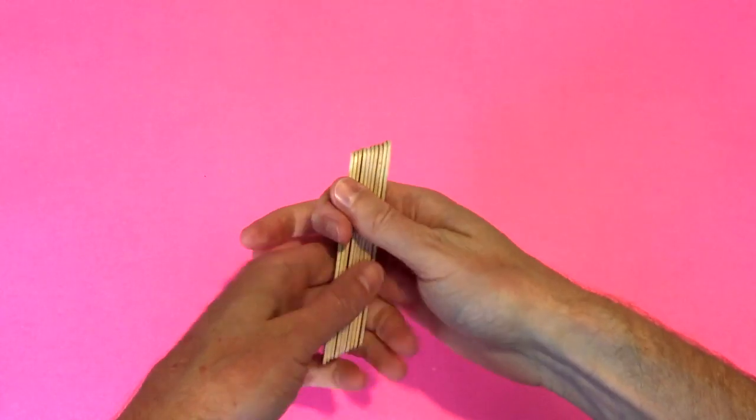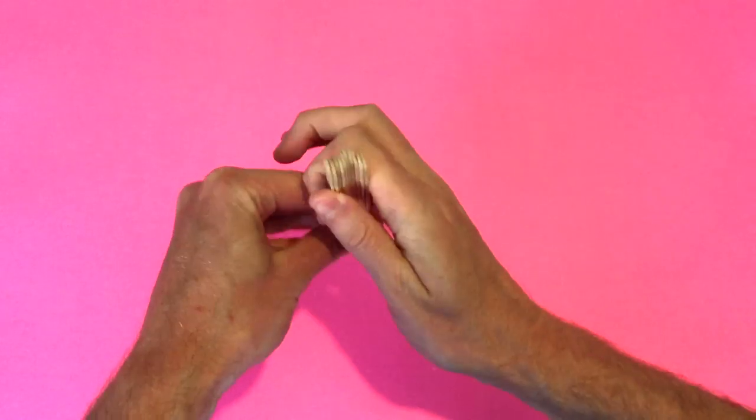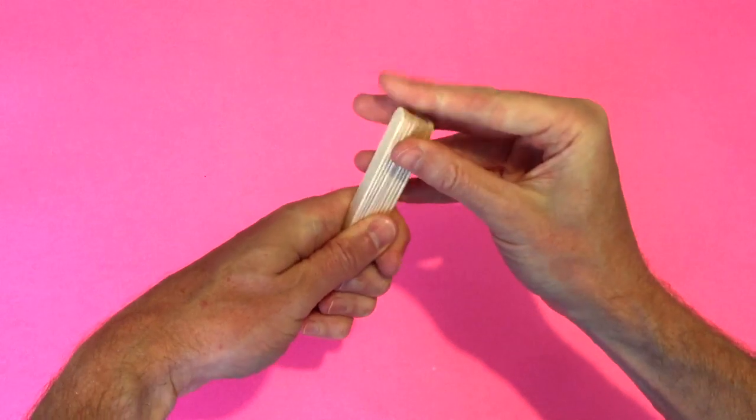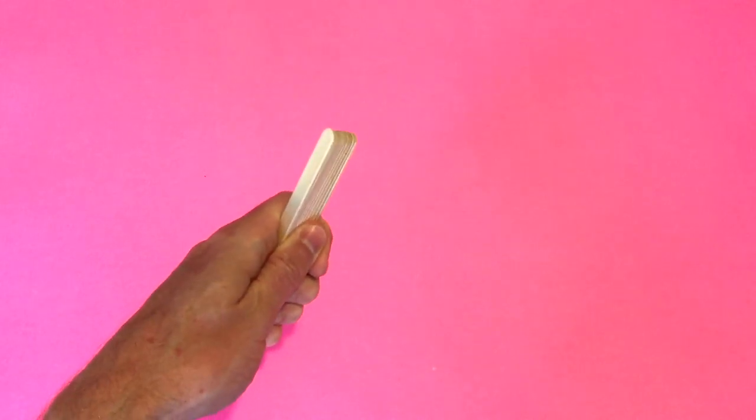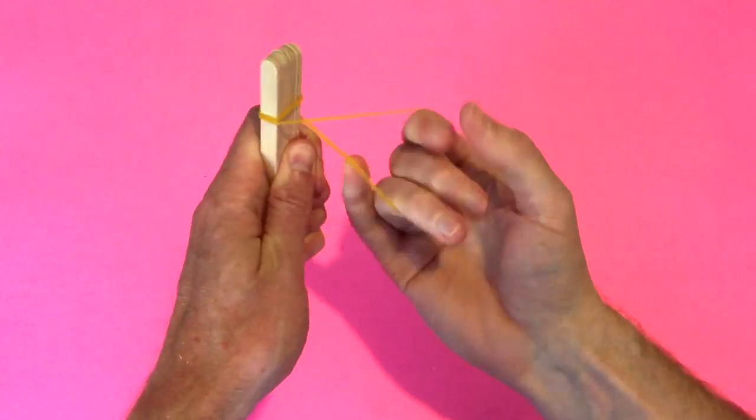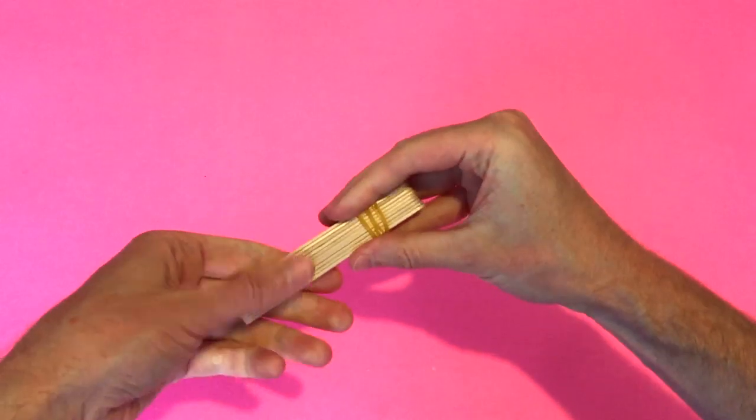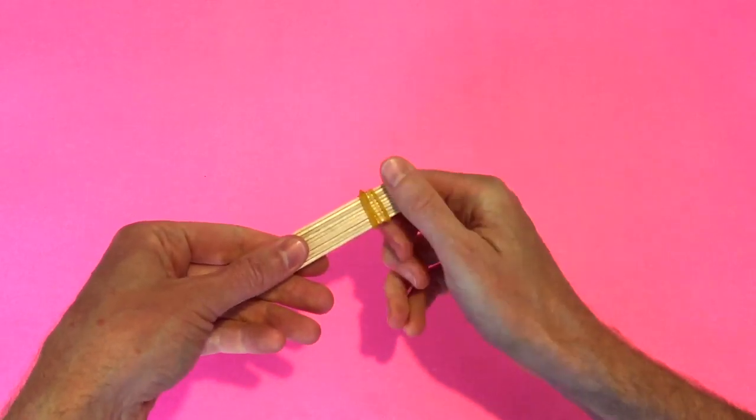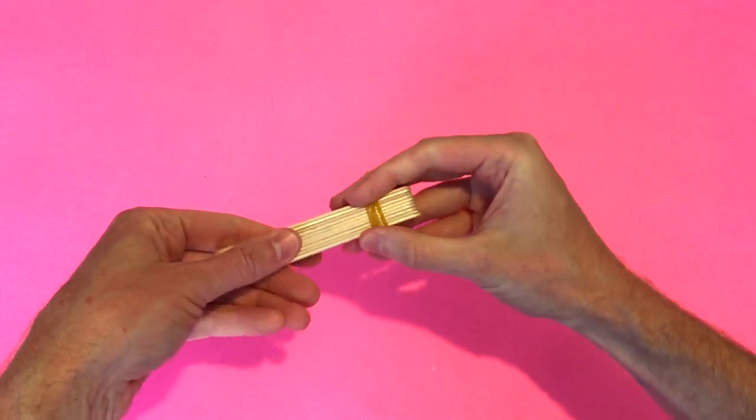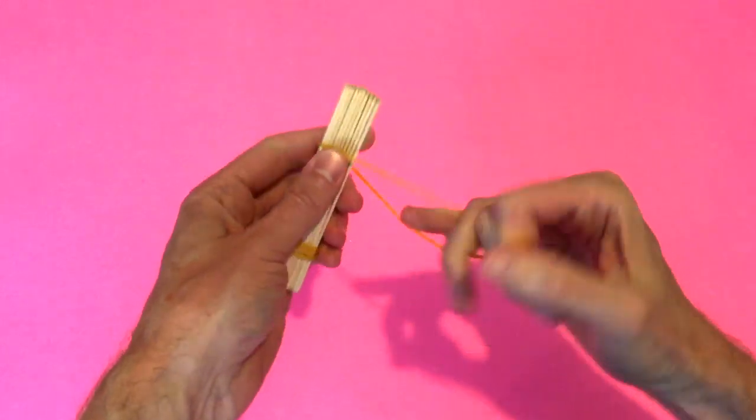So we'll start out with some preparation work. Here we have 10 popsicle sticks, just got them all on top of each other. Get them nice and flat. We're just going to rubber band them up, just putting one rubber band at each end. I'm going to leave about one big finger width at each end. That's one end done and we'll just do the other.